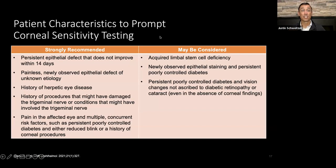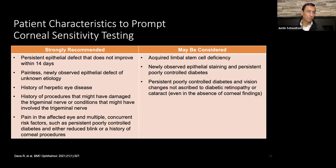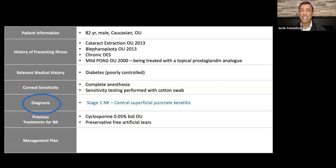Here are the reasons to prompt corneal sensitivity testing — strong recommendations versus may be considered. For this patient, it fit to go ahead: he had a corneal condition not resolving with good therapy including an immunomodulator, punctal plugs, and artificial tears. He had uncontrolled diabetes and had been on long-term topical prostaglandin. All of these make a strong recommendation to do corneal sensitivity testing. I did it, and he had complete anesthesia — he wasn't feeling anything. The diagnosis based on that was stage one neurotrophic keratitis, mainly because of the punctate keratitis.